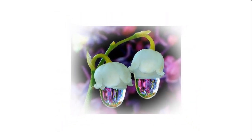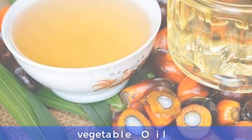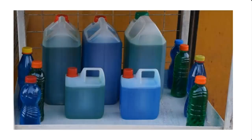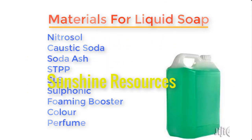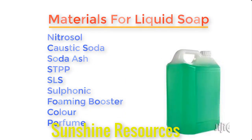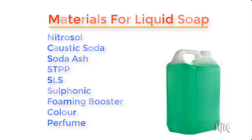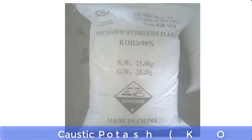Hello and welcome. My name is Sunshine, the project manager at Sunshine Resources. In this video I'm going to show you how to make liquid soap with just two materials: vegetable oil and caustic potash. In our previous videos we have produced liquid soap using about eight or nine items such as nitrosol, caustic soda, soda ash, SDPP, SLS, sulfonic acid, foaming booster, color, and perfume. But in this particular video we will be producing liquid soap with just two major materials: any kind of vegetable oil and caustic potash.